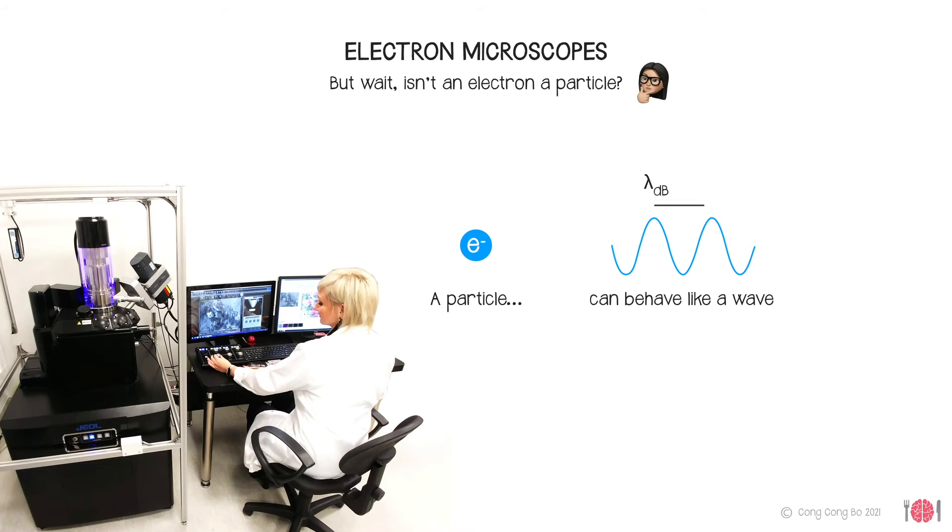The de Broglie wavelength of an electron, its wavelength when it behaves like a wave when fired at a sample, is around 2 picometers. Though due to the lens system used in electron microscopes, the resolution is limited to around 0.1 nanometers. Still, this is 2 million times smaller than light, which is utterly remarkable.